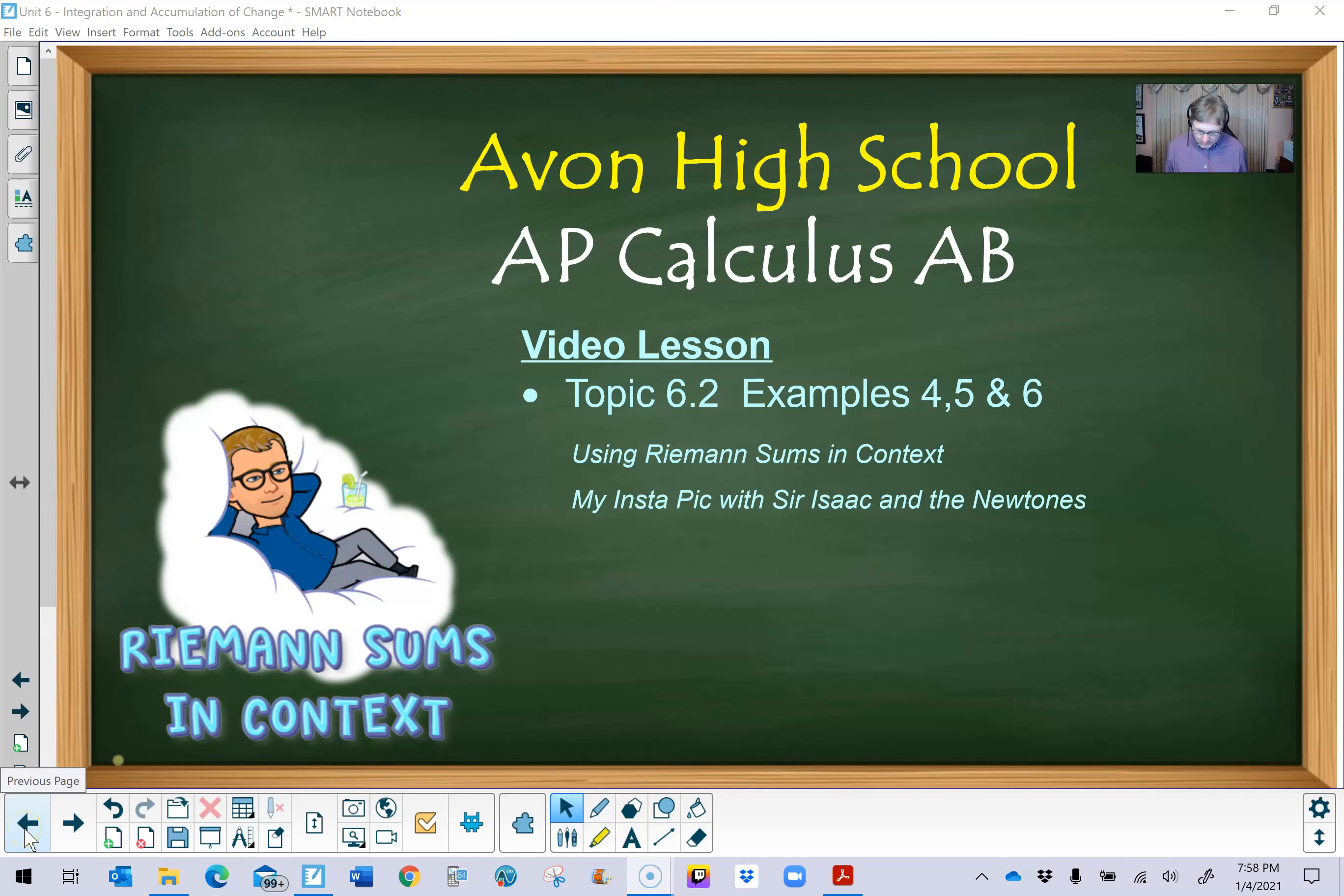Hello AP Calculus AB students, Mr. Record here taking a look at topic 6.2. We're still in the midst of our discussion about Riemann sums. We just recently introduced the two most popular Riemann sums, the left endpoint and right endpoint. And we're going to dive into three examples, four, five, and six, that all share a common contextual theme.